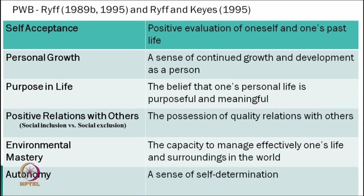The first factor is self-acceptance — positive evaluation of oneself and one's past life. When we accept our present and past life, including good and bad points, all acceptance about our personality, then we have one positive characteristic contributing to happiness. The second factor is personal growth — a sense of continued growth and development as a person. Third is purpose in life — the belief that one's life is purposeful and meaningful. Fourth is positive relations with others — the possession of quality relations.